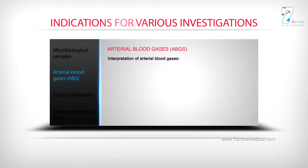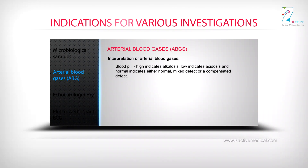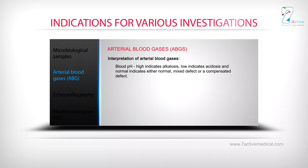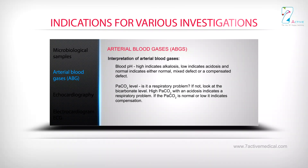Interpretation of arterial blood gases. Blood pH: high indicates alkalosis, low indicates acidosis, and normal indicates either a normal state, a mixed effect, or a compensated effect. PaCO2 level: is it a respiratory problem?